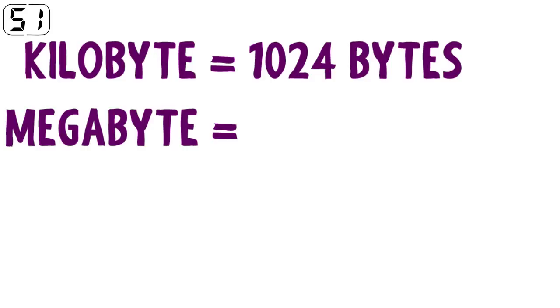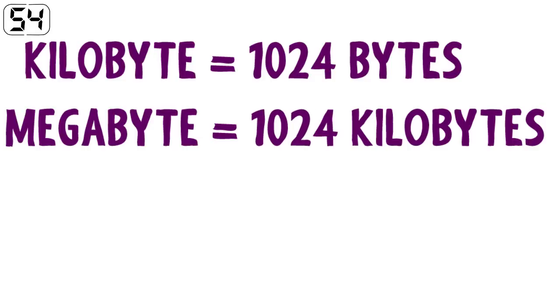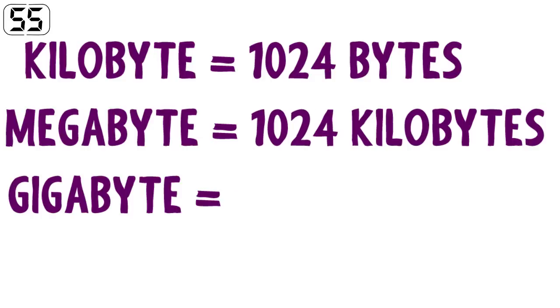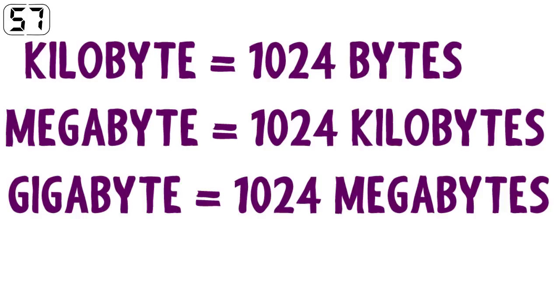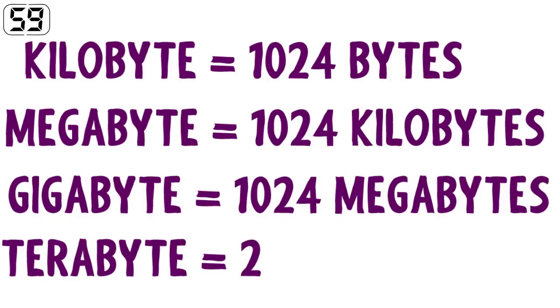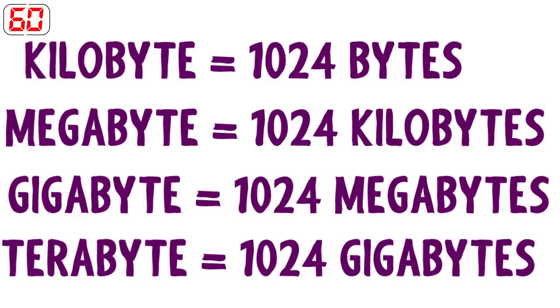1,024 kilobytes equals 1 megabyte. In turn, 1,024 megabytes equals 1 gigabyte. And 1,024 gigabytes equals 1 terabyte.